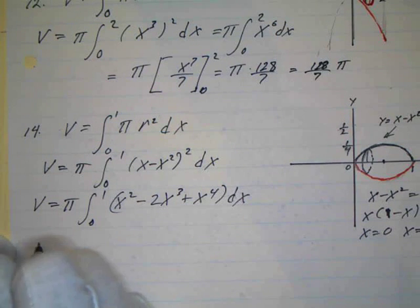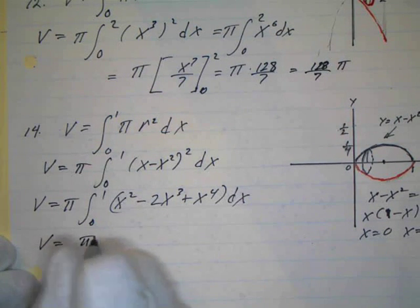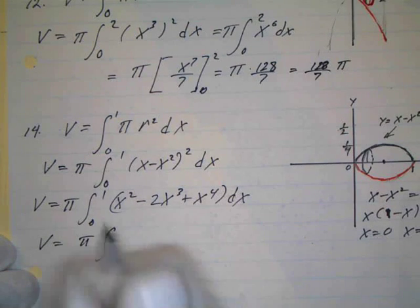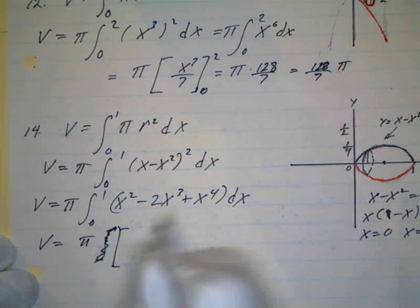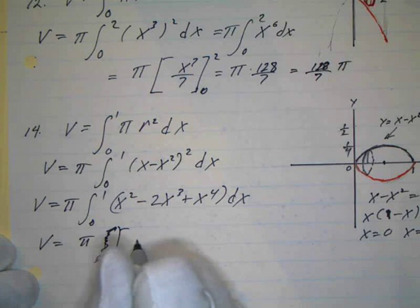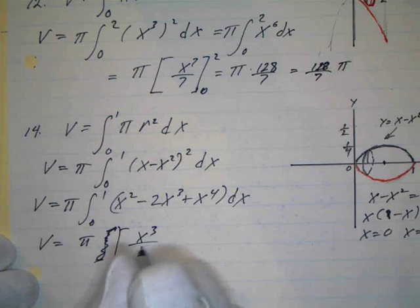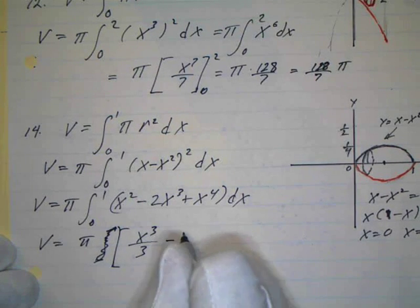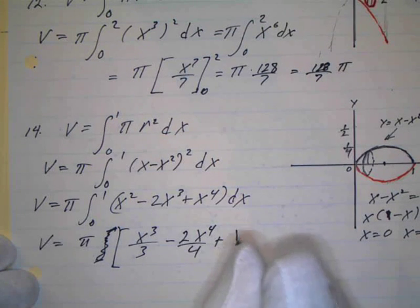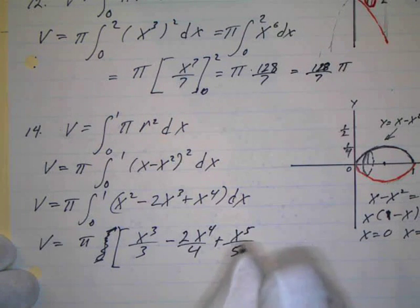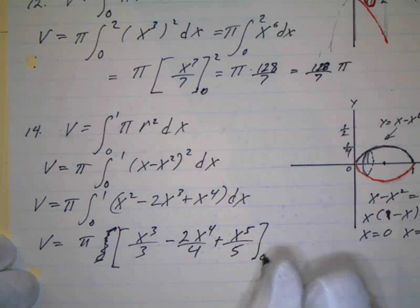Then we have the volume equals pi times the integral from zero. I guess I can just take the antiderivative now. So that's going to be x cubed over 3 minus 2x to the fourth over 4 plus x to the fifth over 5. And that's going to be from 0 to 1.